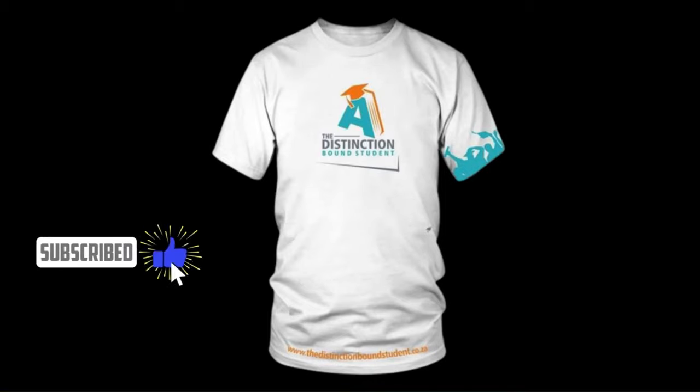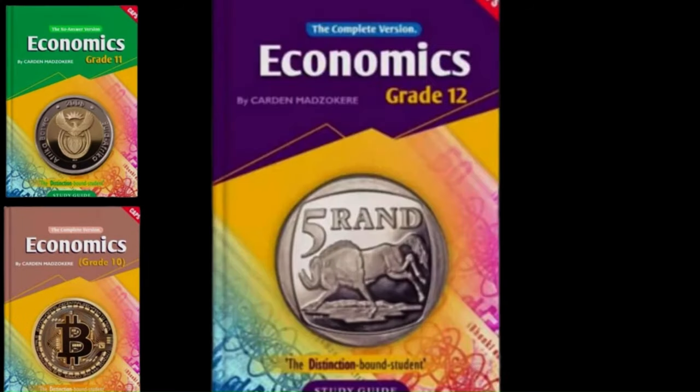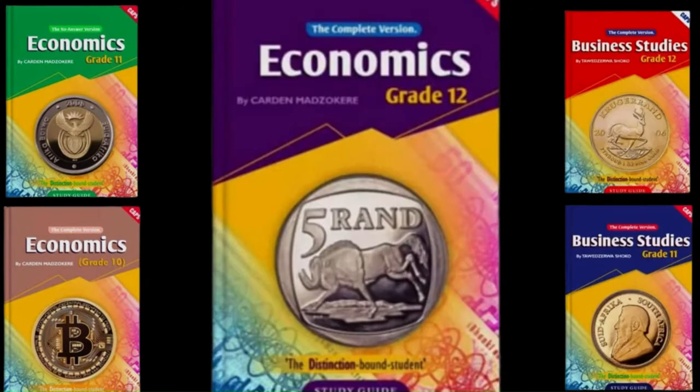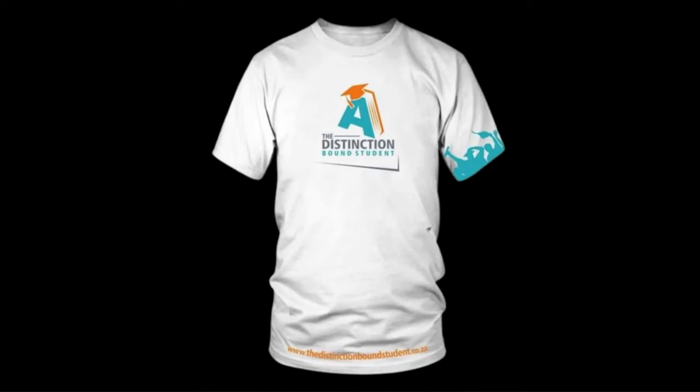Don't forget to like and subscribe to our channel. Also hit the notification bell to get notified every time we post new content. We are giving away distinction bound student t-shirts to people who buy more than 10 books. At the moment, we have economics textbooks for grades 10, 11, and 12, plus business studies for grades 11 and 12. Our books come in two versions: complete versions have answers, and no-answers versions do not. Thank you for your support. See you in the next video. God bless.